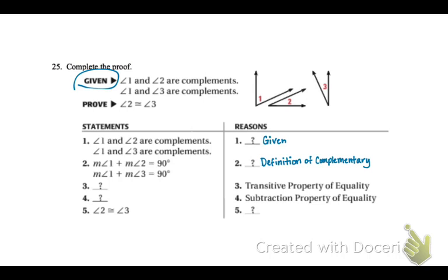The transitive property, if two things are set equal to the same thing, because both of those are set equal to 90, then you can set them equal to each other. And so that's the transitive property, and then they both have measure angle 1, so if you subtract measure angle 1 from both sides, you're left with measure angle 2 equals measure angle 1. And angles having equal measure is the definition of congruence, so the two angles must be congruent.